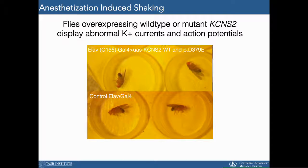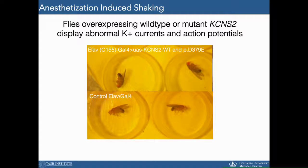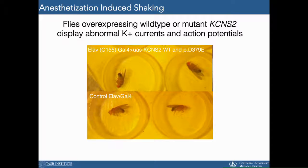Previous studies have shown that the hyperexcitable mutants SHAB and Shaker, when exposed to moderate ether anesthetization, undergo leg-shaking, twitching antennae, and pulsation of the abdomen. We observed a similar phenotype in our flies overexpressing the wild-type or mutant channel, suggesting that these flies are displaying abnormal potassium currents and action potentials. The upper panel shows flies overexpressing the wild-type or mutant channel compared to control flies on the bottom panel.